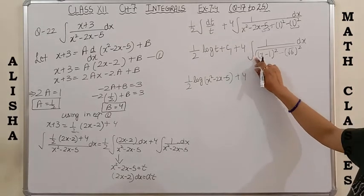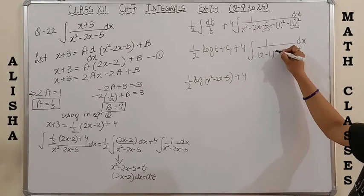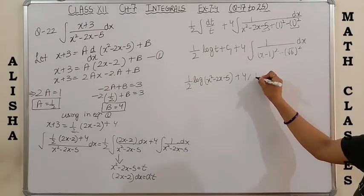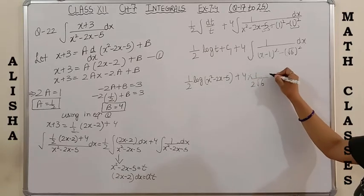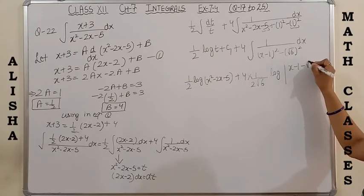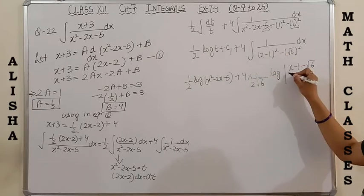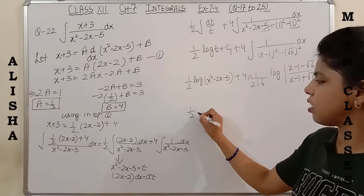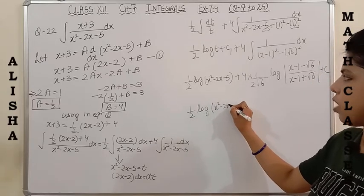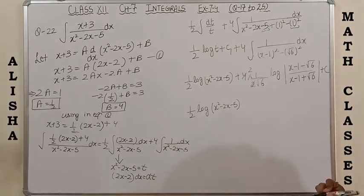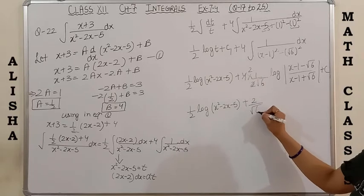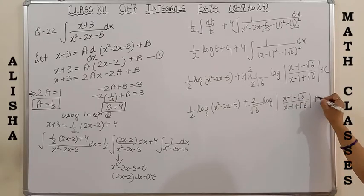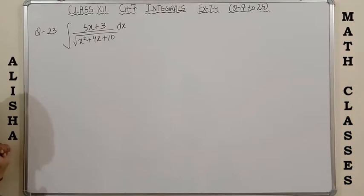This is of the form 1 upon (x²-a²), and the formula is 1/(2a) × log|(x-a)/(x+a)|, where a = √6. So the answer for the second part uses x-1 in place of x and √6 as a. Finally, the complete answer is (1/2)log|x²-2x-5| + (2/√6) × log|(x-1-√6)/(x-1+√6)| + C. Please note it down.